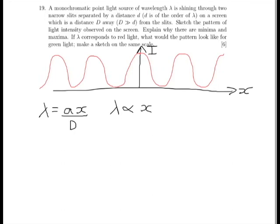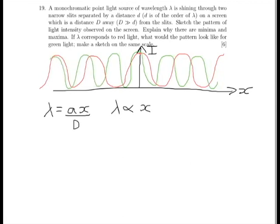So it's going to be a similar pattern, but with a lower frequency sine wave, if you like. Something like that would do the trick. Showing that the fringe separation of green light is smaller than the fringe separation of red light, because the green light has a shorter wavelength.